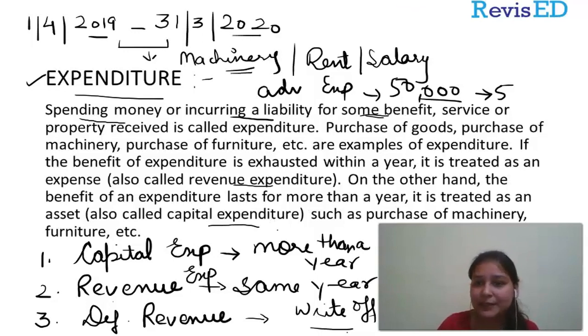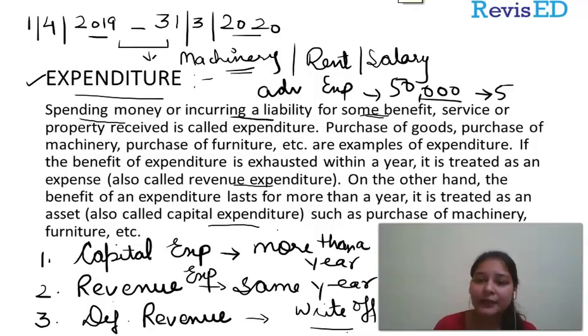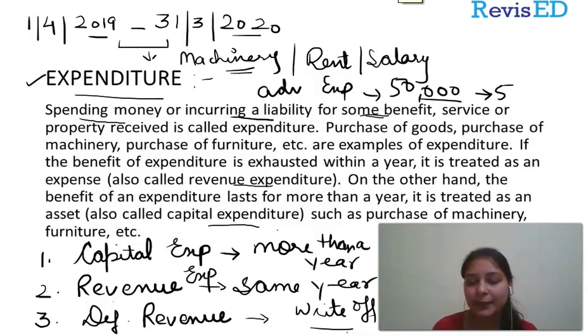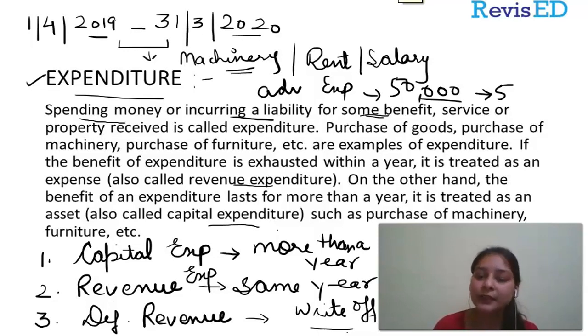Expenditure means the amount we have spent to get some benefit. If you are getting the benefit only for a year, that would be revenue expenditure. And if you are getting the benefit for more than a year, that would be your capital expenditure.